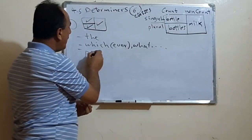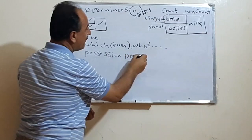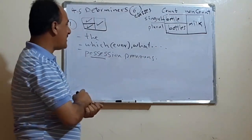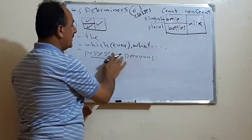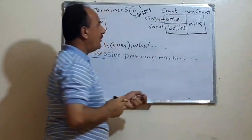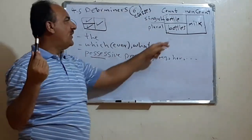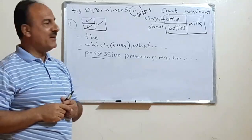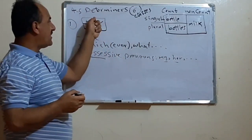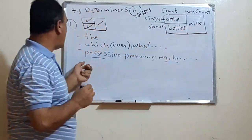The third group is the possessive pronouns — my, her, etc. We can say 'this is my pen', 'these are my pens', or 'this is my coffee'. The possessive pronoun can precede all noun types, whether singular, plural, or uncountable.